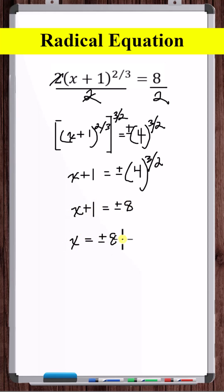Now, let's subtract 1 from both sides. x is equal to 8 minus 1, 7, and x is equal to minus 8 minus 1, so minus 9.